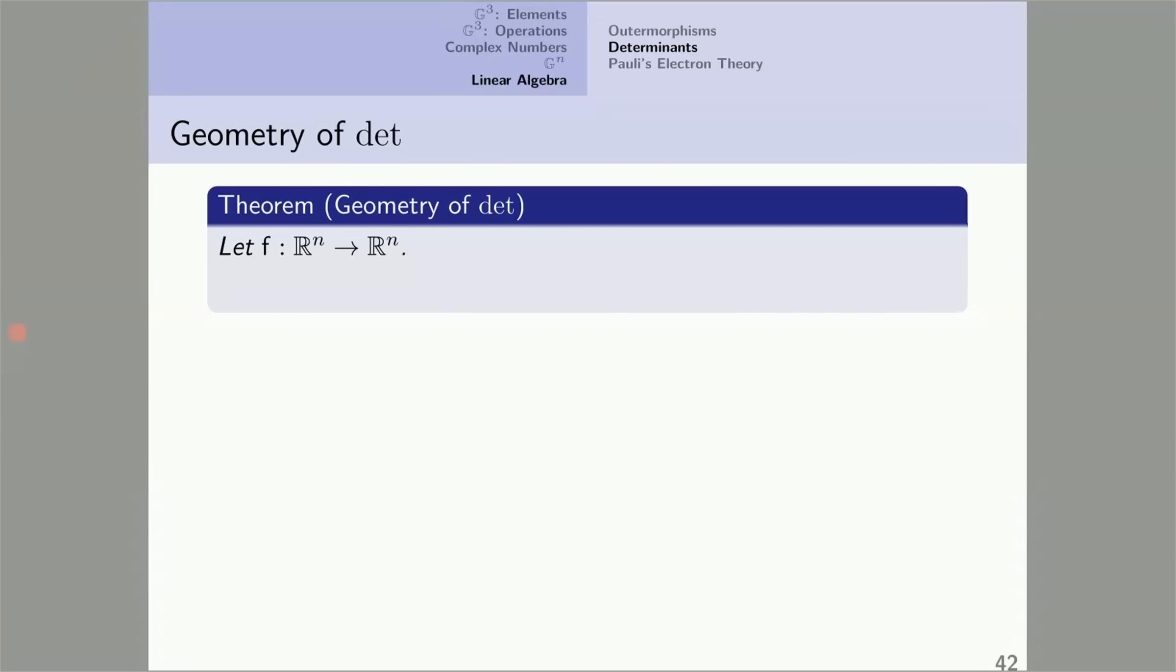The geometry of the determinant. Geometric algebra provides a nice geometric interpretation of the determinant of a linear transformation. Here's the theorem. We start with a linear transformation from R^n to R^n. It has an automorphism extension from G^n to G^n, and the extension satisfies this equality. The equality does not mean that the parallelopiped indicated by this outer product is blown up by this factor to give the parallelopiped indicated by this outer product.